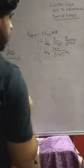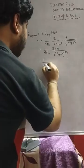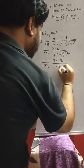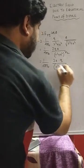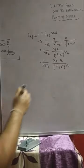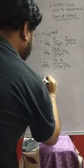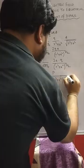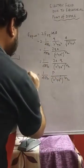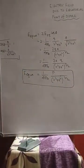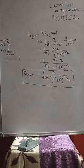So E_equatorial = (1/4πε₀) × 2qa / (r² + a²)^(3/2). Since 2a is the length of the dipole and q is the charge, 2a × q = the dipole moment p. Therefore E_equatorial = (1/4πε₀) × p / (r² + a²)^(3/2). That is the expression for the electric field due to the equatorial point of a dipole.